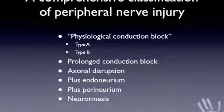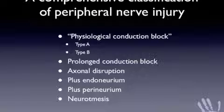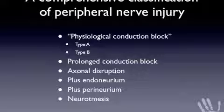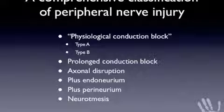The comprehensive classification system I use for peripheral nerve injury is: physiological conduction block type A — intraneural circulatory arrest and ischaemia; type B — oedema; prolonged conduction block with demyelination; then progressive axonal loss with disruption of axons in isolation, then endoneurium, then perineurium; and finally neurotmesis.